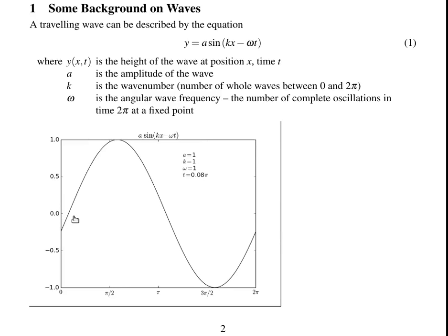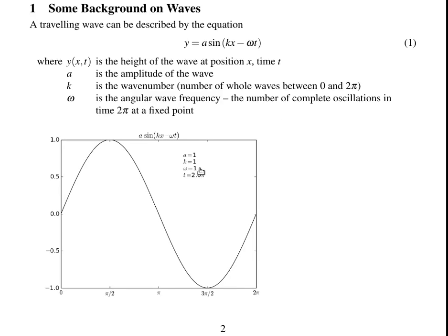So here's a propagating wave, and the cursor here is a fixed point, and you can see that within this simulation, within this animation, the wave is going to go up and down just once at this point, which is why omega is equal to 1 for this wave. I'm running for 2π units of time.